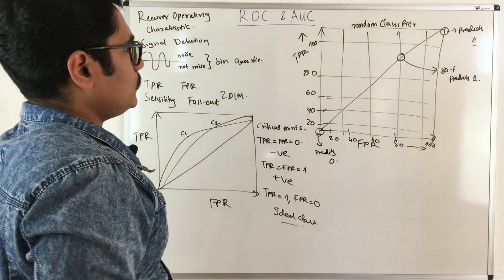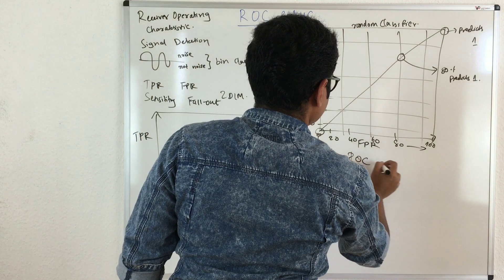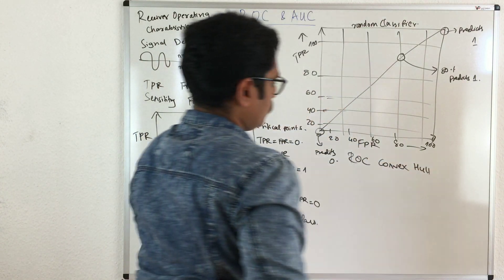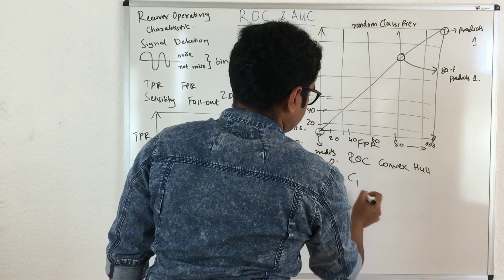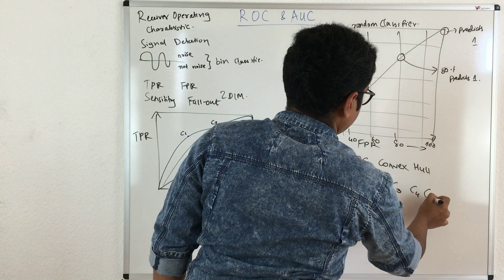Now what we do is understand one more concept called ROC convex hull. To understand this, let's take five classifiers: C1, C2, C3, C4, and C5.